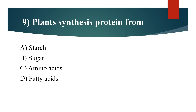Ninth question: Plants synthesize protein from? Option A: Starch. Option B: Sugar. Option C: Amino acids. Option D: Fatty acids. Answer is Option C: Amino acids.